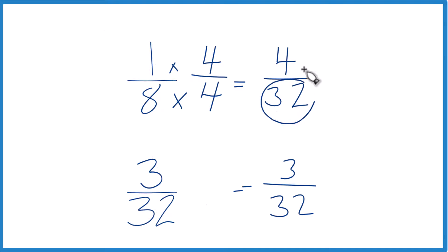But now, same denominator, we just compare the numerators. And you can see 4 is greater than 3. 4 32nds is greater than 3 32nds. Only by 1 32nd, but it's still greater.